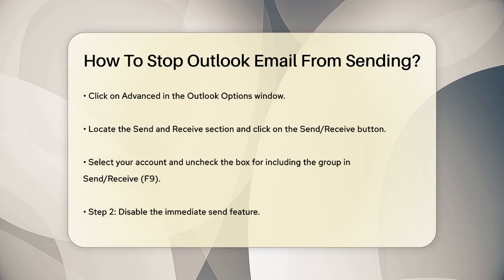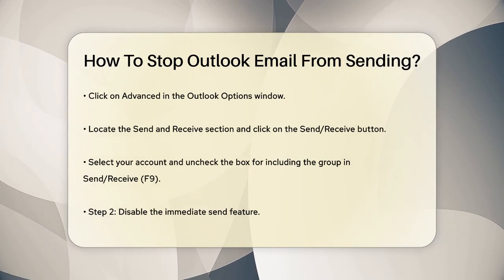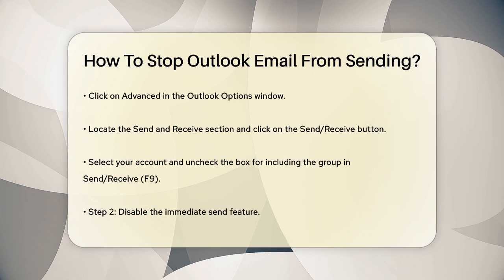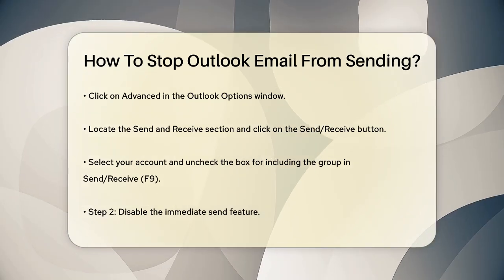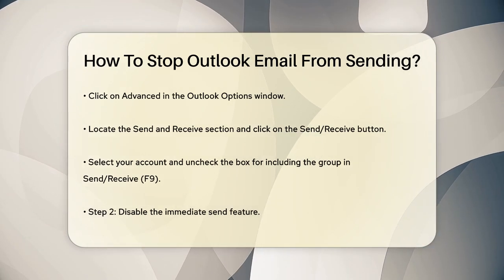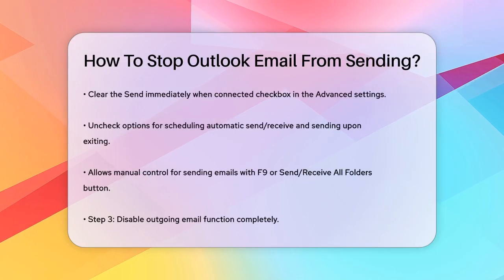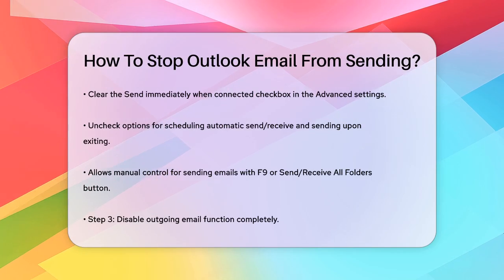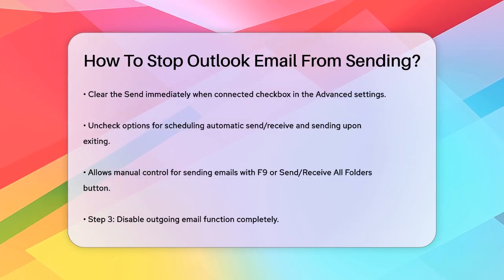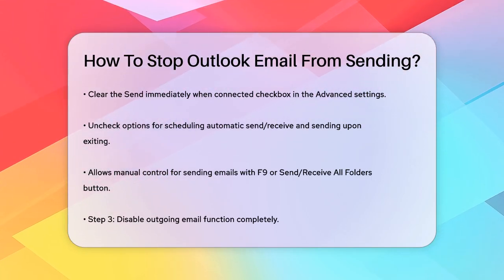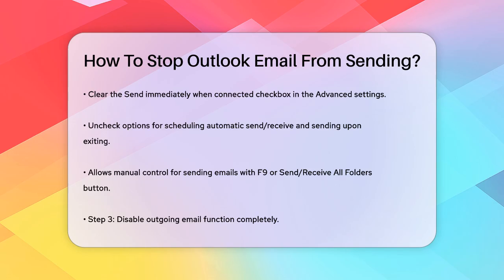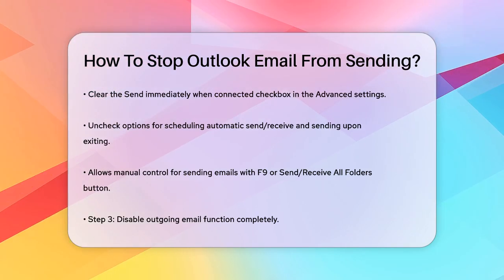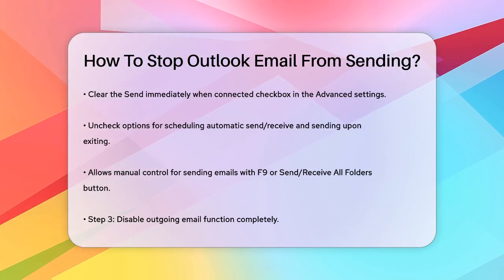Another way to control email sending is by disabling the immediate send feature. Still in the advanced settings, scroll down to the Send and Receive section and clear the "Send immediately when connected" checkbox. Then click on the Send Receive button and clear the boxes that say "Schedule an automatic send receive every minutes" and "Perform an automatic send receive when exiting." This gives you full control over when your emails are sent, allowing you to press F9 or use the Send Receive All Folders button to send emails manually.